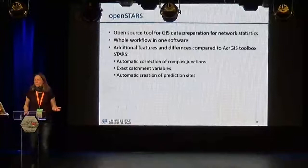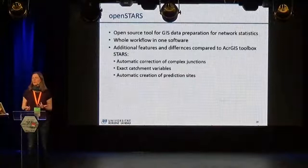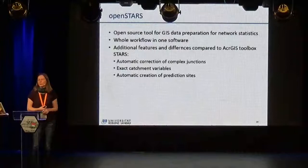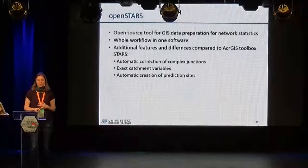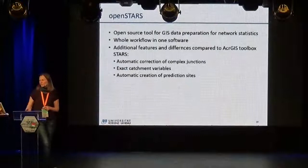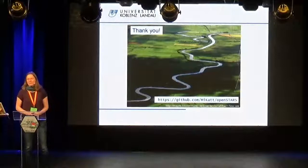To wrap up: OpenSTARS is an open-source tool to prepare GIS data for network statistics, and it helps you have the whole workflow in just one software, which is R. It has some additional features compared to the original toolbox: the correction of complex junctions is handled differently, you can calculate exact catchment variables, and you can automatically create prediction sites — which was not possible before, as you had to digitize points manually. Thank you, and if you are interested and find a bug, drop me a line.